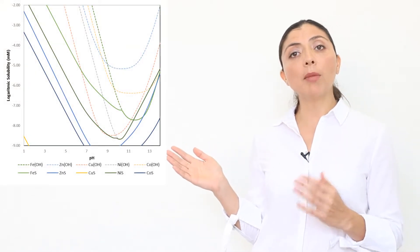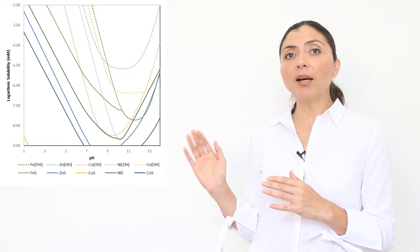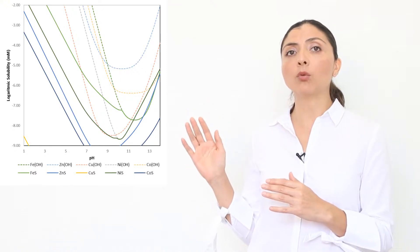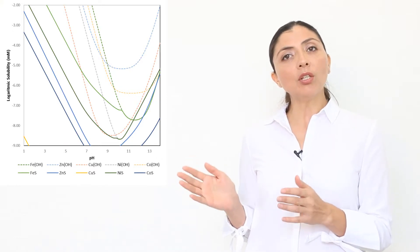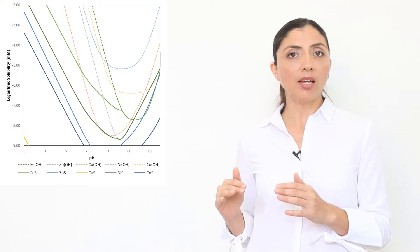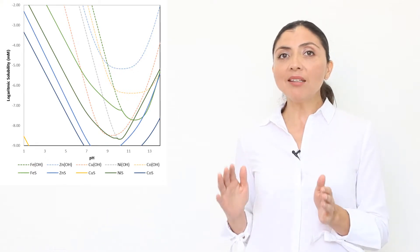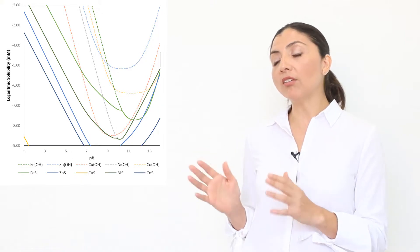The solubility product determines if the metal will stay dissolved or will precipitate. Ksp can be determined theoretically based on the maximum value that the ionic concentrations can have at equilibrium concentrations for a given temperature. This table shows the solubility of different metal sulfides and hydroxides when the maximum metal sulfide has dissolved at 25 degrees Celsius. The values corresponding to metal sulfides have a lower Ksp as compared to the metal hydroxides, meaning that the precipitation with sulfide results in less soluble salts.